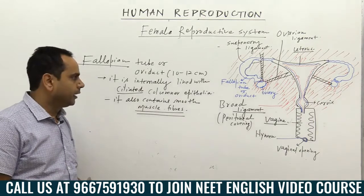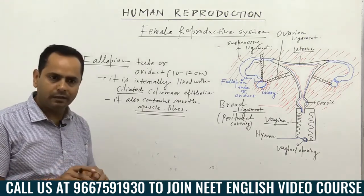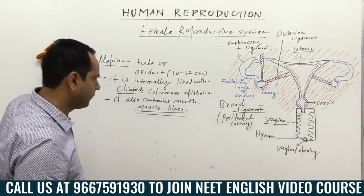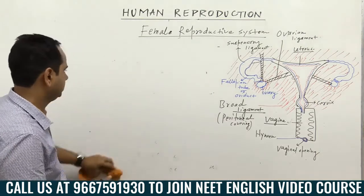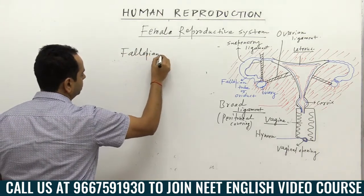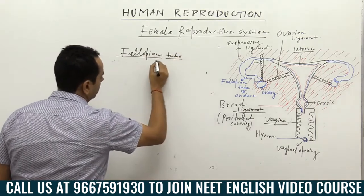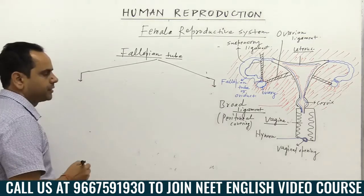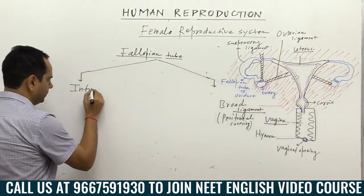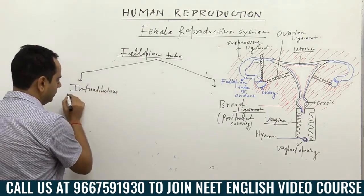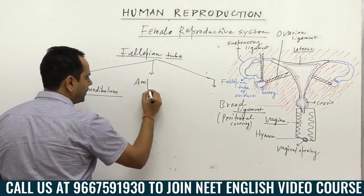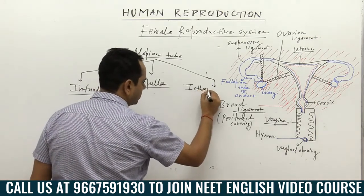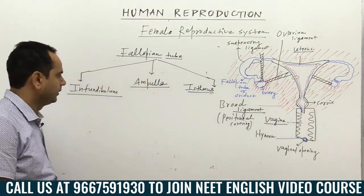The fallopian tube can be divided into three different parts. The initial part is called the infundibulum, the large broad middle part is called the ampulla, and the last smaller structure is called the isthmus, which joins the uterine cavity.